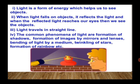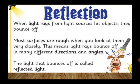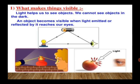Reflection: When light rays from the light source hit an object, they bounce off. Most surfaces are rough when you look at them very closely. This means light rays bounce off in many different directions and angles. The light that bounces off is called reflected light.